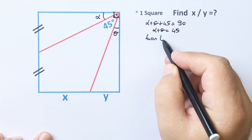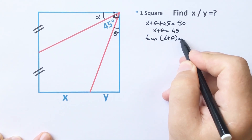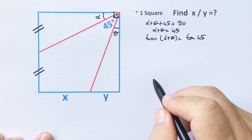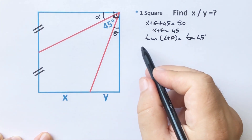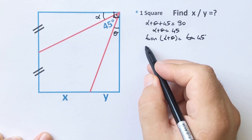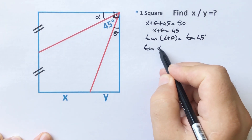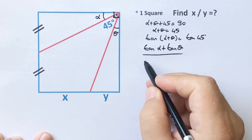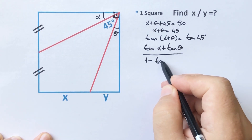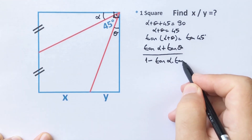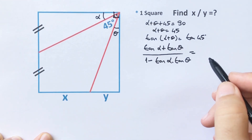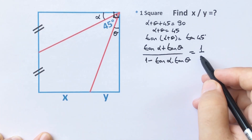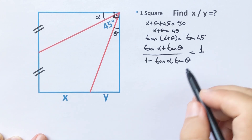If we take tangent of both sides of the equation: tangent(alpha + theta) equals tangent(45 degrees). We know that the expansion of tangent(alpha + theta) equals tangent(alpha) plus tangent(theta), over one minus tangent(alpha) times tangent(theta), which equals tangent(45 degrees), equal to one.